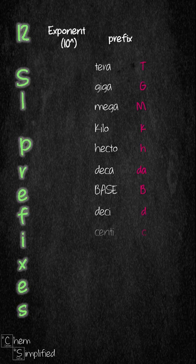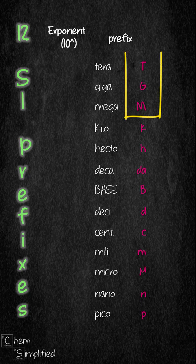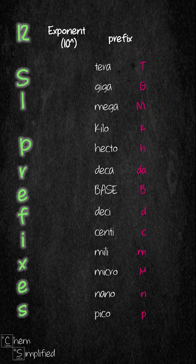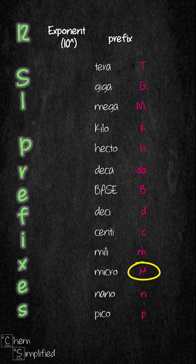Here are the 12 SI prefixes ranging from terra all the way to pico. Each prefix has an abbreviation. Terra, Giga, and Mega are in uppercase while the rest are in lowercase. Deka is abbreviated by two letters, DA. Micro is represented by a Greek letter, Mu.